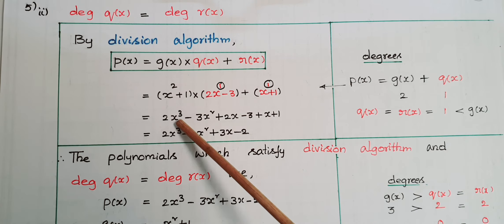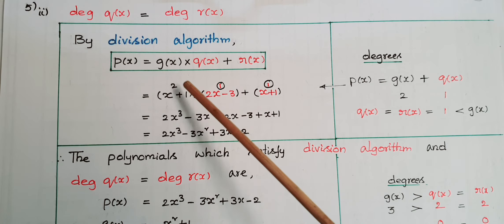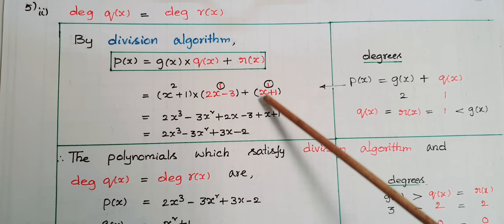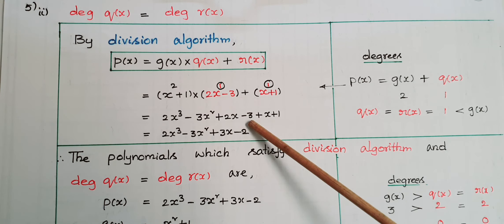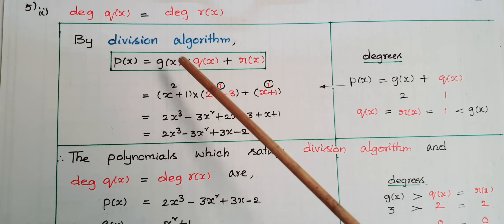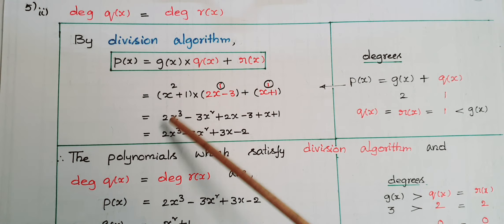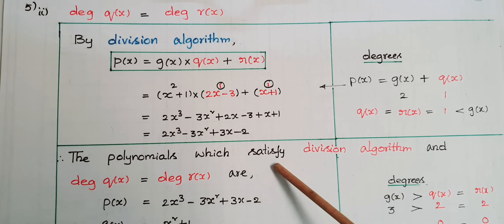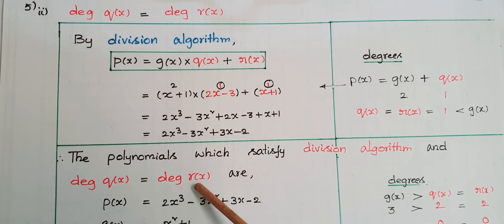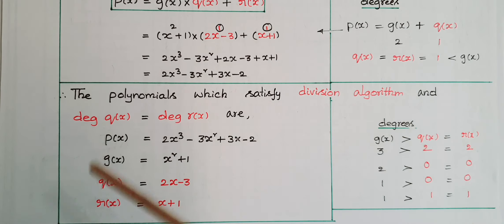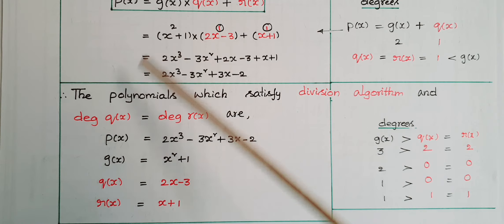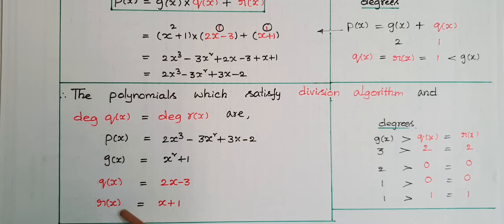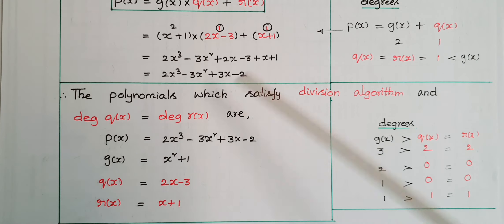Multiplying: (x² + 1)(2x − 3) + (x + 1) = 2x³ − 3x² + 2x − 3 + x + 1 = 2x³ − 3x² + 3x − 2. So p(x) = 2x³ − 3x² + 3x − 2, g(x) = x² + 1, q(x) = 2x − 3, r(x) = x + 1. Here degree of q(x) equals degree of r(x), both equal to 1.